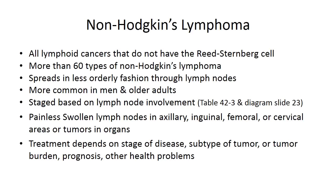Non-Hodgkin's lymphoma encompasses more than 60 types of the disease. All lymphoid cancers that do not have the Reed-Sternberg cell are referred to as non-Hodgkin's lymphoma. It spreads in a less orderly fashion through the lymph nodes and is more common in men and older adults, in contrast to Hodgkin's, which affects younger populations.